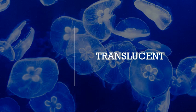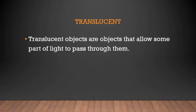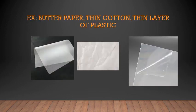Next is translucent objects — T-R-A-N-S-L-U-C-E-N-T. Translucent objects are objects that allow only some part of light to pass through them, not completely. You cannot see what is on the other side clearly — you can only see a small part. Examples are butter paper, thin cotton, and thin layer of plastic. You can see through butter paper but not completely. Thin cotton allows light to pass through it. Plastic files — you can see through them but not completely. Such objects are called translucent objects.